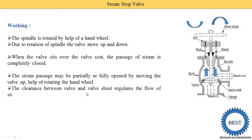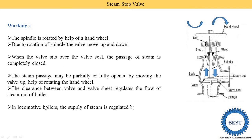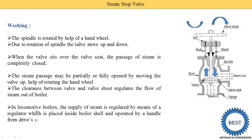The clearance between the valve and valve seat regulates the flow of steam out of the boiler. In locomotive boilers, which were earlier used in trains run by steam engines, the supply of steam is regulated by means of a regulator.